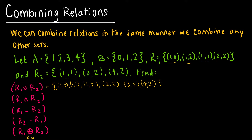R1 intersect R2 means what do they have in common. So let's look at what they might have in common. (1,1) looks to be an ordered pair that they have in common, and I think that about does it. So the only thing in the intersection is (1,1).